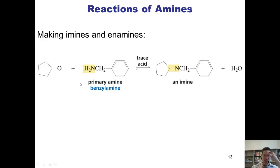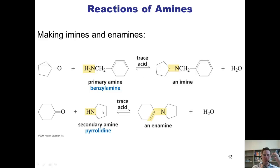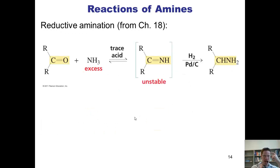As you may recall from chapter 18, reacting an aldehyde or a ketone with a primary amine and trace acid gives this type of compound called an imine. Doing the same reaction with a secondary amine like this gives you this type of compound called an enamine. I love the word enamine because, once again, it sounds like the Spanish word enemigo, which means enemy. Are you an amigo or an enemigo? Are you an amine or an enamine?